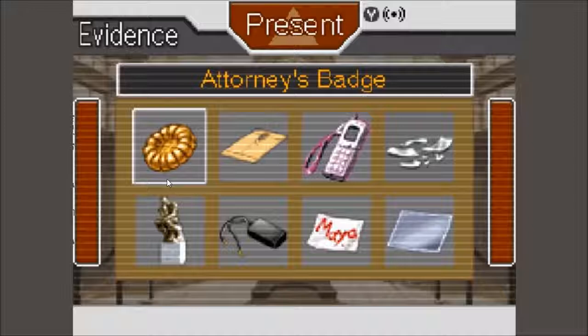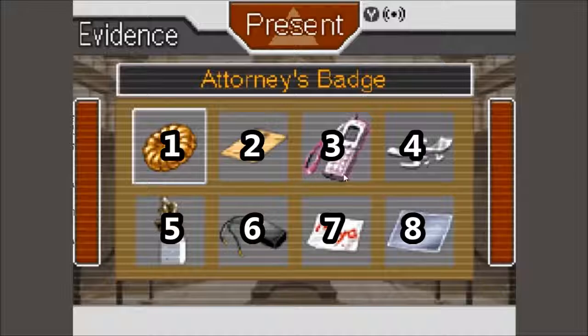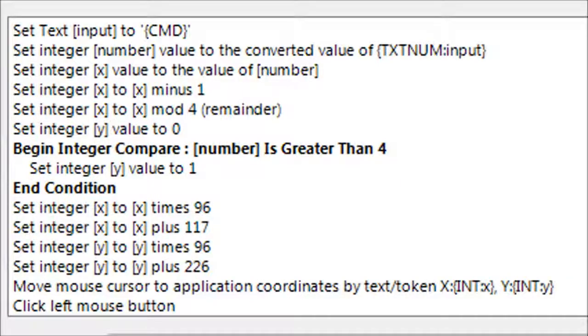When presenting items, you'll need to pick from your profiles or evidence, which are displayed eight at a time. After having made commands for standard buttons for left and right and confirming, it helps to have a quick command for selecting these. I say item, followed by a number, and it moves the cursor to the corresponding box and clicks on it. You can make a maths formula for this, or roughly measure all eight coordinates. It takes about the same amount of time to make.